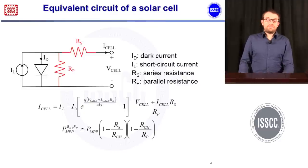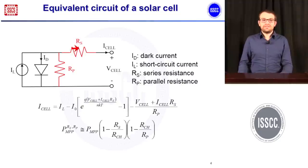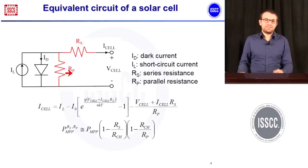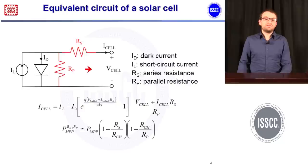Now let's make things a bit more complicated. We have seen the illumination current and the diode, but there are also more things to model, like dissipative effects. We have a series resistance due to the finite conductance of the material and also to the contact resistances, and we also have a shunt resistance RP modeling the impurities in the material. Both of these will reduce the maximum power you can extract from a solar cell.